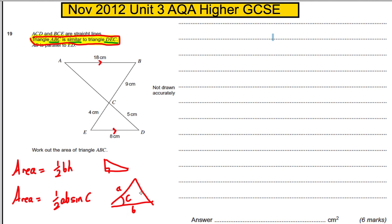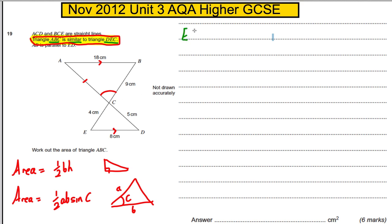What would be great is if we knew one of these angles and the adjacent sides, so we could apply a half a b sine C. We know no angles to start with, however we've got all the sides of triangle ECD, so in triangle ECD we could use the cosine rule to work out this angle.